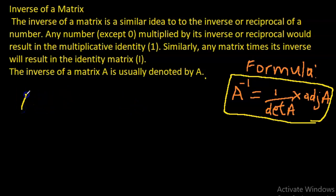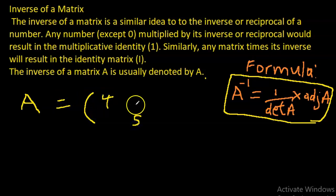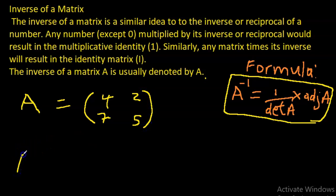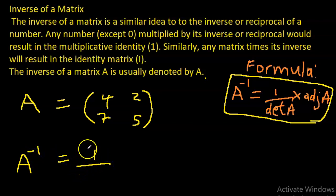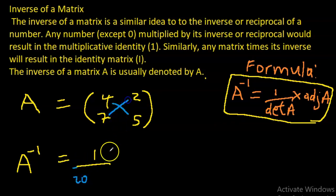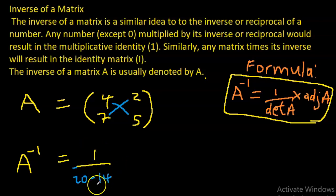So if we have a matrix A equal to [4, 5; 2, 7] and we're asked to find A inverse, then A inverse equals one over the determinant. We calculate the determinant by cross-multiplying: 4 times 7 is 28, minus 5 times 2 which is 10 — so the determinant is 28 minus 10 equals 18. Actually, 4 times 5 is 20 and 7 times 2 is 14, so the determinant is 20 minus 14 which is 6. So the inverse is 1 over 6, times the adjoint.